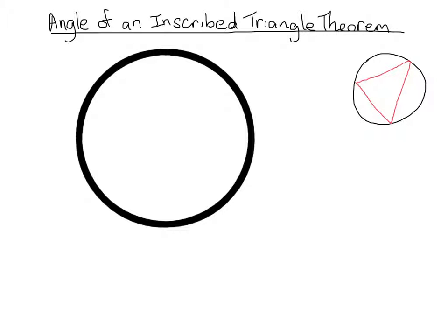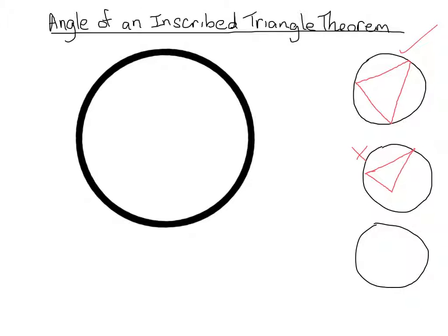If only two, one, or no vertices were touching the circle, then it would not be inscribed. Every vertex must touch the circle. This is the same for a quadrilateral, pentagon, or any figure inscribed in a circle — every vertex has to touch the circle. So that is an inscribed quadrilateral.